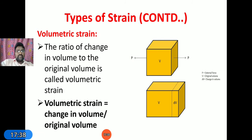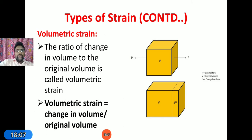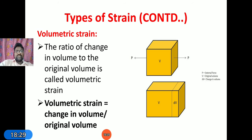Volumetric strain means whenever a body is subjected to tensile or compressive forces, the volume of the body changes. For example, consider a balloon — when we fill air into it, it expands. Due to this expansion the change in dimensions with respect to original dimensions is known as volumetric strain. The formula is: volumetric strain = dV/V, where V is the original volume and dV is the change in volume.